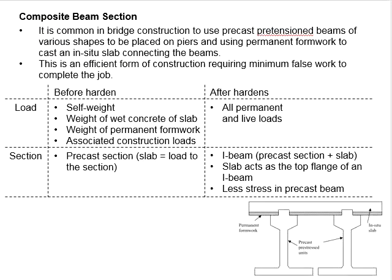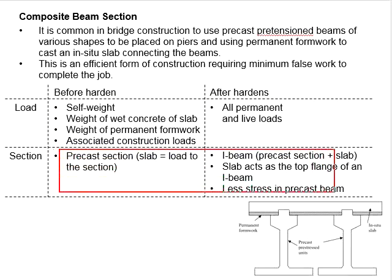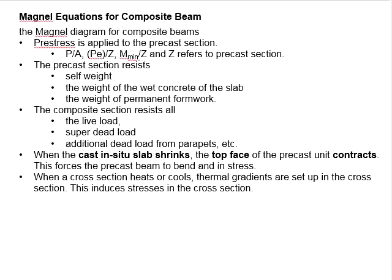In the previous videos, we mentioned two stages of construction for the composite member: before the hardening of the in-situ slab, and after the hardening of the in-situ slab. Before hardening, the section considered will be purely the pre-cast unit. However, after hardening, the slab becomes a part of the member and now the composite member in the form of an I-beam is considered. This will be translated into the Magnel diagram equations, particularly in terms of the loads acting on the member as well as its geometrical properties of the section.